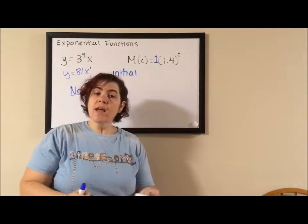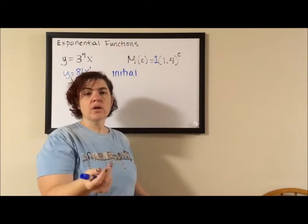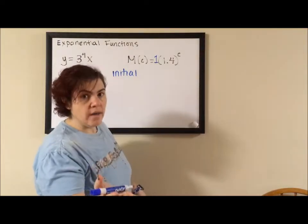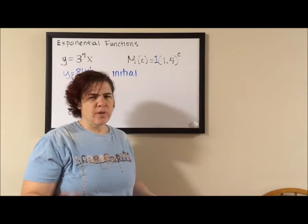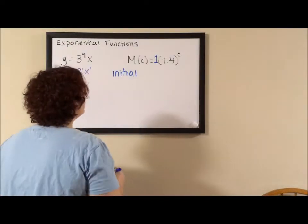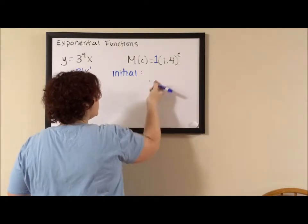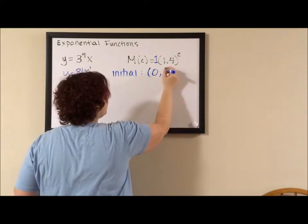We don't write all our 1s. If I was going to hand you this marker, I would say, hey, here's a marker. I don't say, here's 1 marker. Sounds a little presumptuous. My initial value is 1, and this is where we cross the vertical axis. So I'm going to write it as an ordered pair, (0, 1).